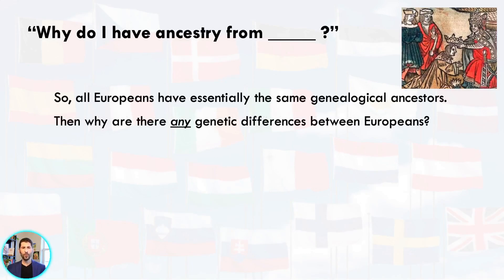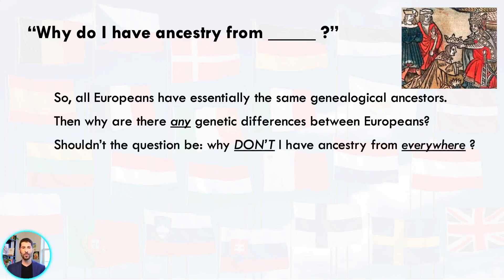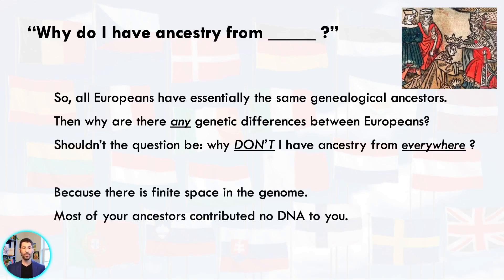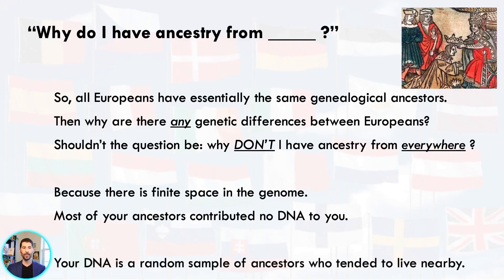So all Europeans have essentially the same genealogical ancestors. Then why are there any genetic differences between Europeans? Shouldn't the question be: why don't I have ancestry from everywhere in Europe? The answer is because there's finite space in your genome. Most of your ancestors contributed no DNA to you at all. Your DNA is really a random sample of ancestors who tended to live nearby you or your recent ancestors.